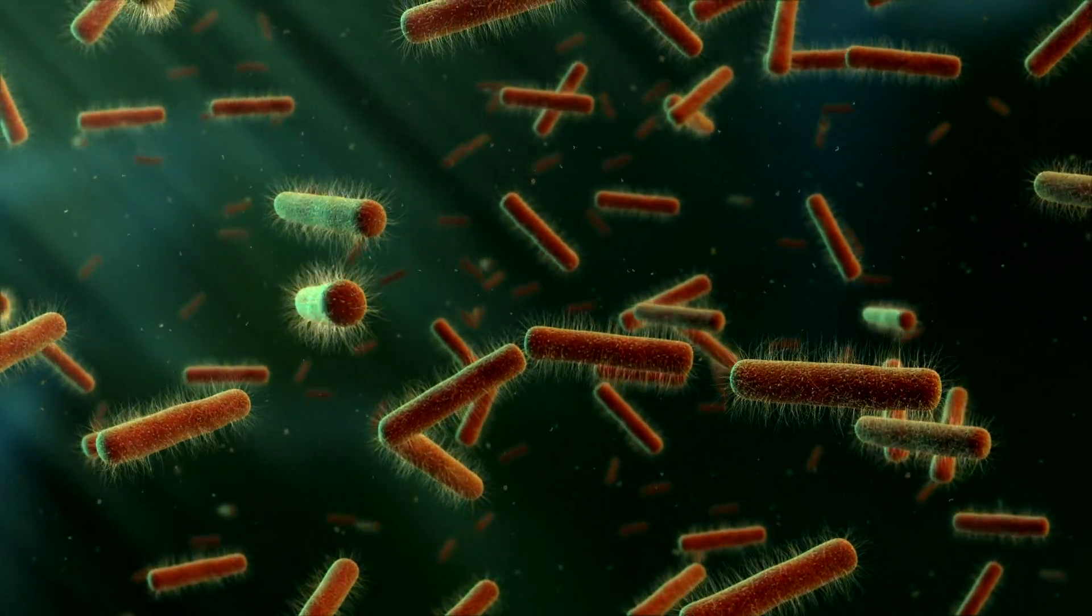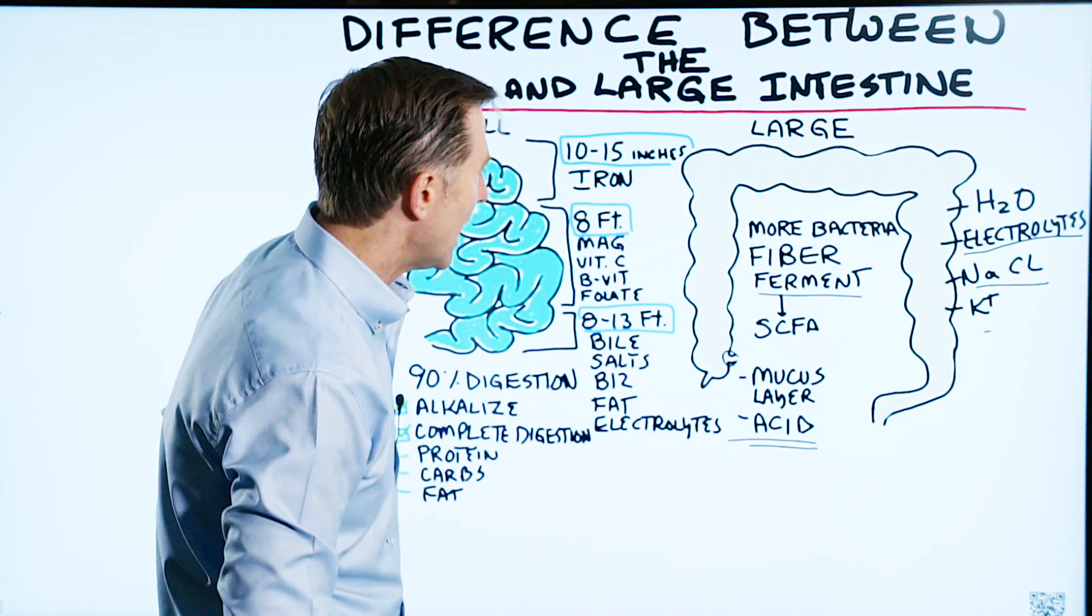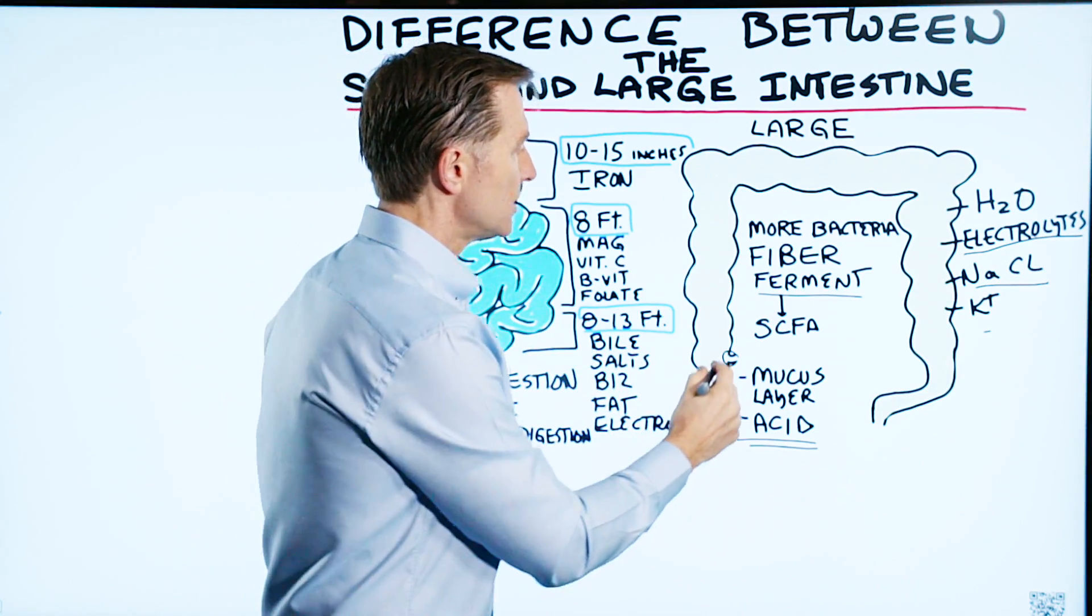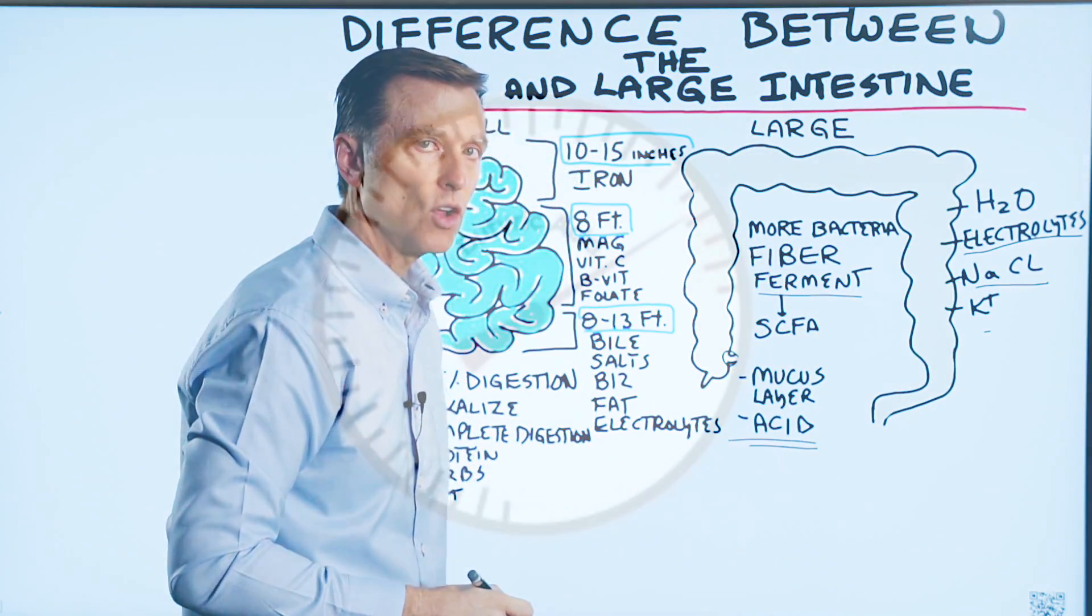Now, when this fiber is fermented, where you have these microbes releasing enzymes to break down this carbohydrate, it's going to turn into small chain fatty acids. And one is called butyrate.